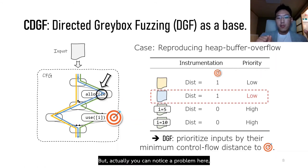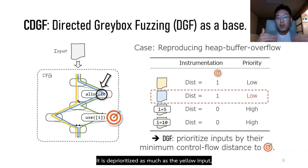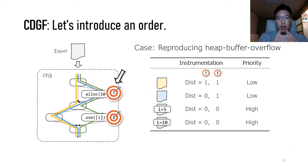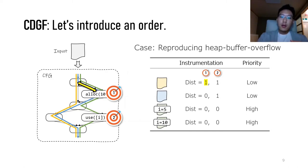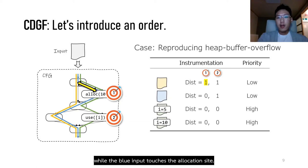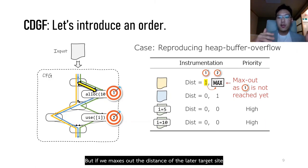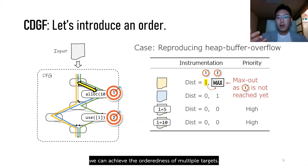But you can notice the problem here: even though the blue input touches the allocation site, it is deprioritized equally with the yellow input, which does not touch the allocation site at all. So now we define all the target sites. We set the prioritized target to the allocation site to measure how far each input is from it. The yellow input is far from the allocation site by 1, while the blue input touches it. This ordering enforces the prerequisite ordering of targets by maximizing the distance of later target sites if a prerequisite site has not been reached yet — achieving the ordering of multiple targets.